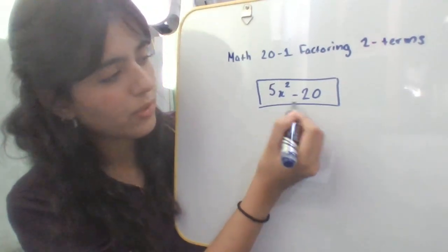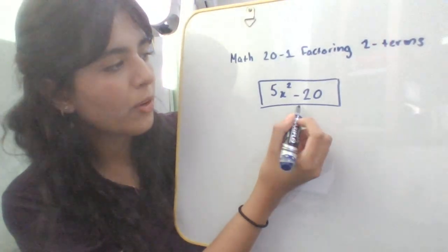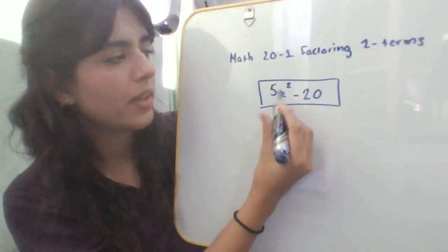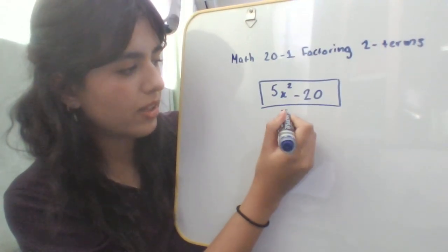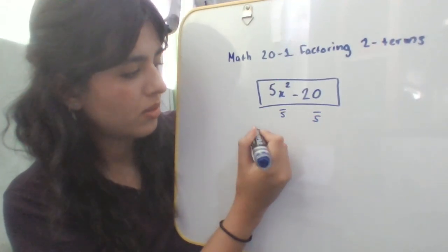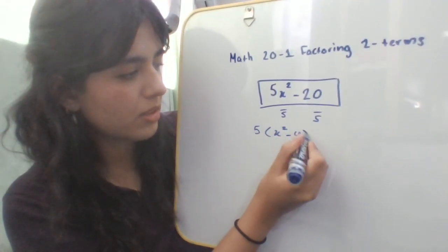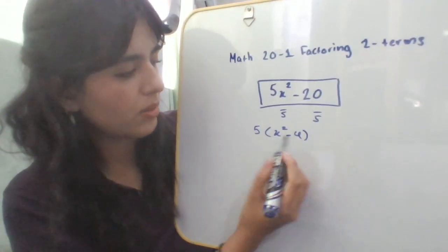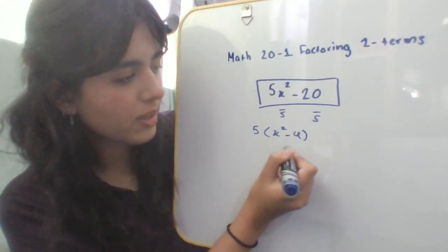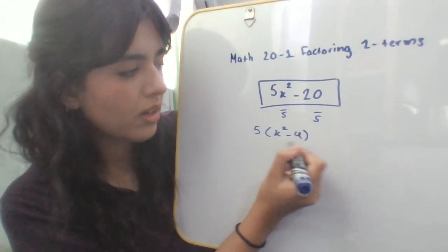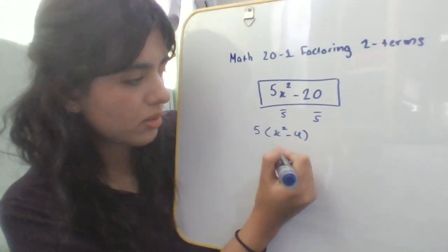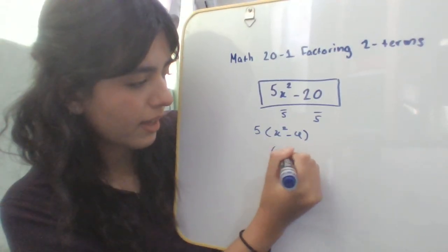The first thing you want to do is look at both factors and see one number you can take out from both of them. Here, both numbers are divisible by 5, so you take out a 5. You can write it as 5(x² - 4) because 20 divided by 5 is 4. Next, you want to split this up even more since there's a square and this term can be square rooted.